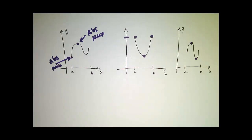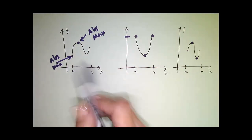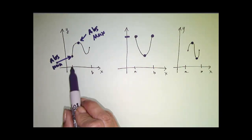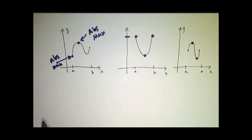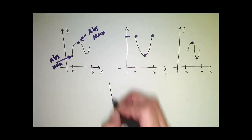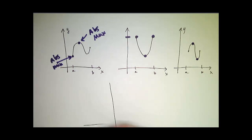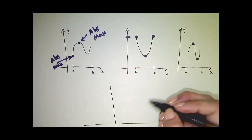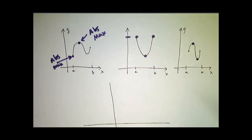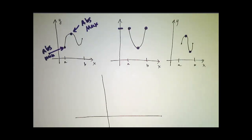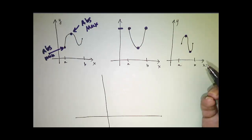Now, the conditions that I had here were that I was on a closed interval from a to b, and that my function was continuous. Let's change some of those conditions and see why we don't necessarily have an absolute maximum or an absolute minimum if we do so.